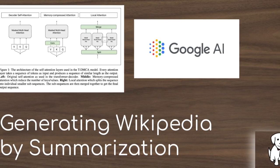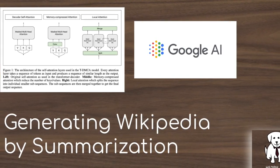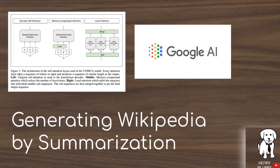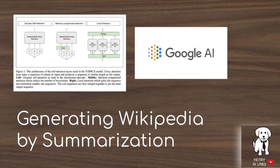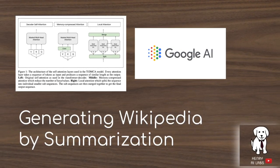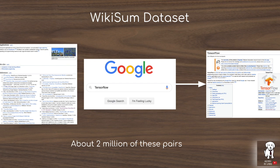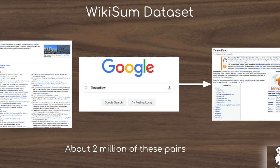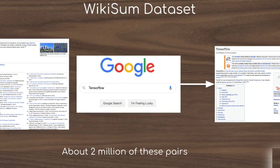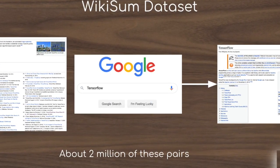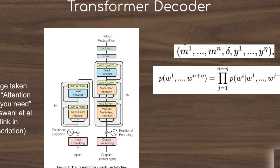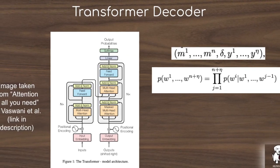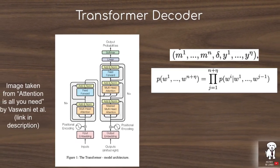This video explores a paper called 'Generating Wikipedia by Summarizing Long Sequences' from Google AI. This experiment explores a really interesting application of natural language processing: generating unique summaries from a massive set of source documents about a given topic. They collect 2 million input-output pairs for supervised learning, where the input is all articles cited in the Wikipedia page plus the top 10 search results of that topic. To make this problem tractable, they filter raw data with a TF-IDF extractive algorithm that's then passed into a transformer abstractive summarization model.